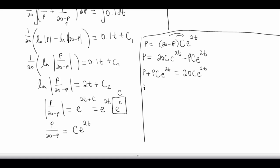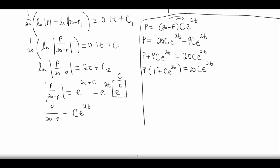Now here I can factor out my p. I'm getting closer. So I end up with p times 1 plus c e to the 2t equals 20c e to the 2t. Then now I can divide both sides by what's left here. So p equals 20c e to the 2t over 1 plus c e to the 2t. So that is going to be my solution to this logistic differential equation.